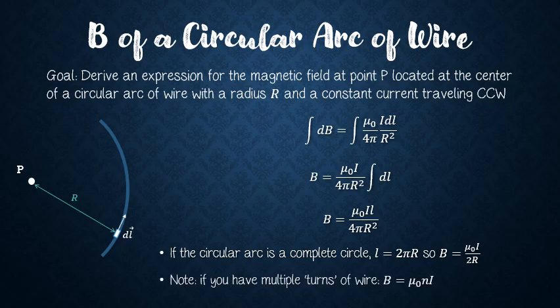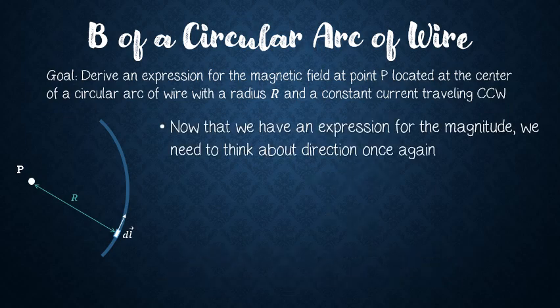If you have multiple turns of wire — say a hundred circles closely packed — that's called a solenoid. The expression for the magnetic field of a solenoid is mu naught · n · I, where n is the number of turns per unit length. You do not need to know how to derive this expression, but you should know it exists, it is on your equation sheet, and you should be able to use it properly.